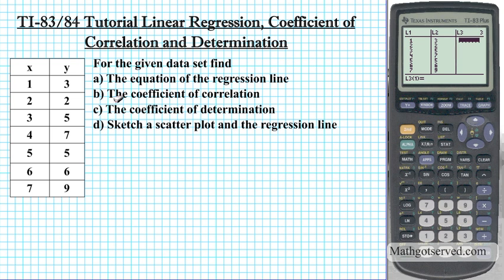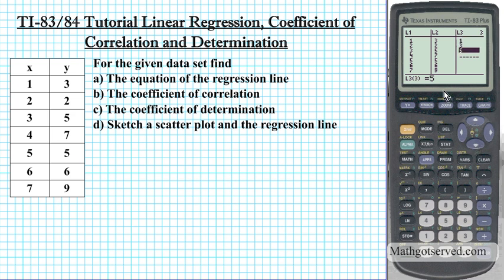Another way to enter a long list is to go to the top, have that highlighted, and then enter a squiggly bracket and just enter the list. For example, to enter 1, 3, 5 into list 3, go to the top and have L3 highlighted, then enter 1, 3, 5, close it with a squiggly bracket, and press enter. Notice how all three elements are entered into list 3 without pressing enter multiple times — a handy shortcut.